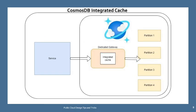In the case of integrated cache, the cache is generated inside your dedicated gateway's memory space. When a request comes to your dedicated gateway, it first verifies whether the request is currently in the integrated cache. If it is not there, it goes to the partition, creates the response, and returns it to your service. While returning, the cache stores the response. When the same request is generated again, the integrated cache returns the response rather than calling Cosmos DB.